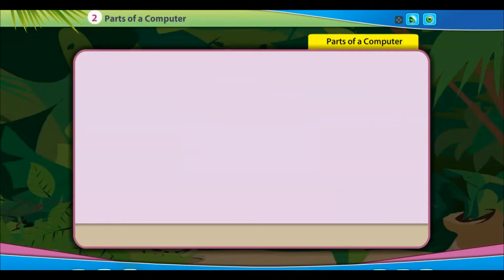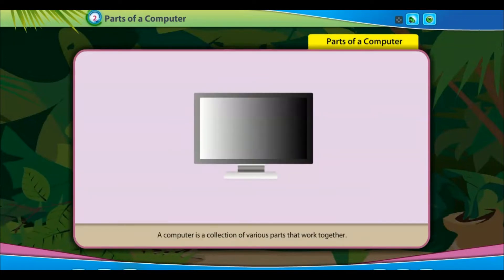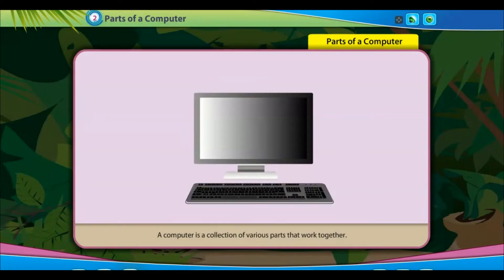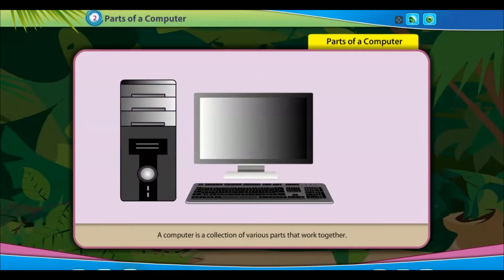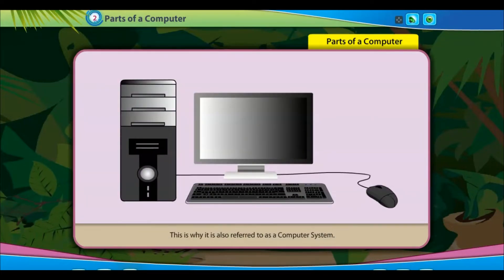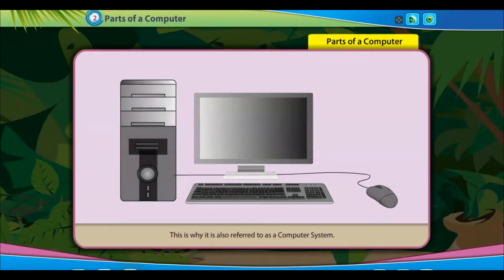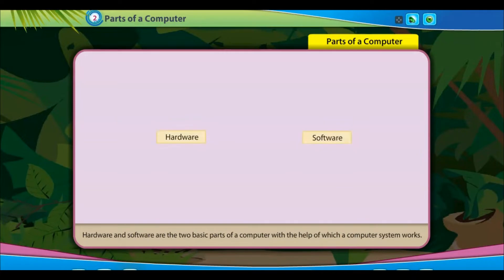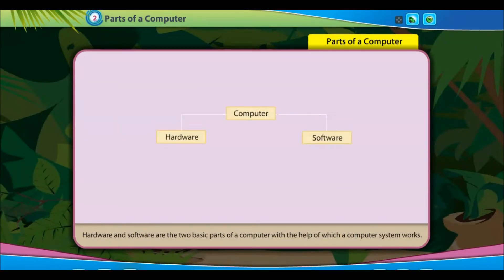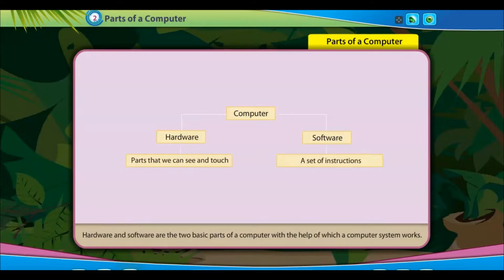A computer is a collection of various parts that work together. This is why it is also referred to as a computer system. Hardware and software are the two basic parts of a computer, with the help of which a computer system works.